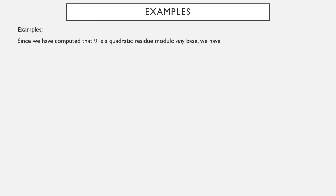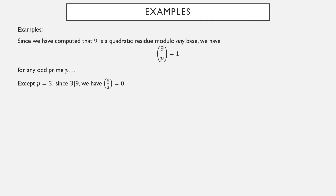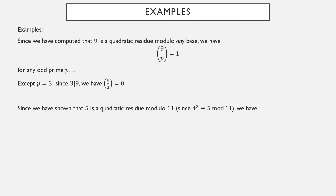We'd better work through some examples to get accustomed to this new notation. We've computed that nine is a quadratic residue modulo any base, so the Legendre symbol nine over p is equal to one for any odd prime p except for p equals three. Since three is a factor of nine, nine is actually equivalent to zero modulo p, so the Legendre symbol nine over three is actually zero instead of one. But modulo any other odd prime, nine is a non-zero quadratic residue and therefore the Legendre symbol nine over p would be equal to one. Five is a quadratic residue mod 11; therefore the Legendre symbol five over 11 is equal to one.